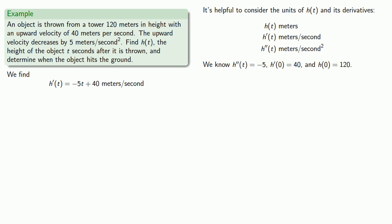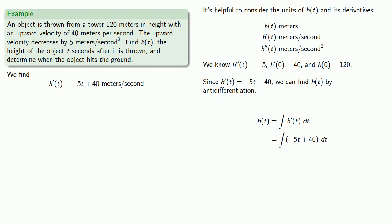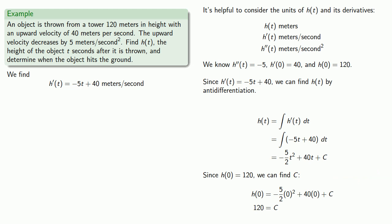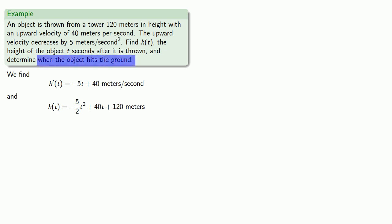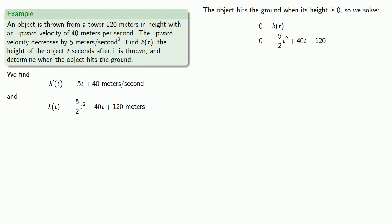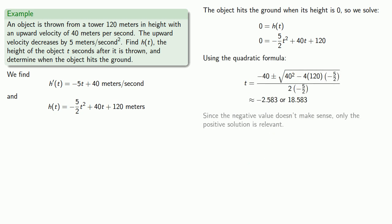And now I can find h of t by anti-differentiation. h of t will be the antiderivative of h prime of t, and I'll find the antiderivative — don't forget the plus c — which we can find because we know h of 0 equals 120. And so my formula for h of t is minus 5t squared plus 40t plus 120 meters. I want to know when the object hits the ground, so that's when the height is 0. This gives us an equation with two solutions, but since the negative value doesn't make sense, only the positive solution is relevant — the object hits the ground about 18.583 seconds after it's thrown.